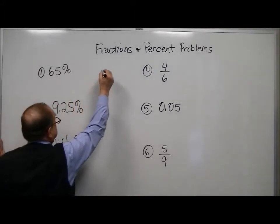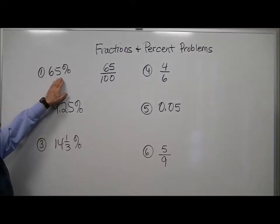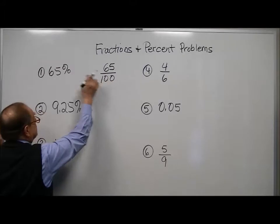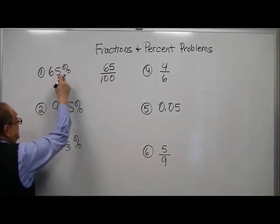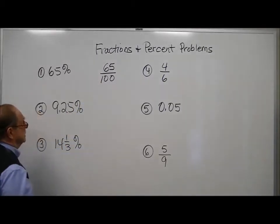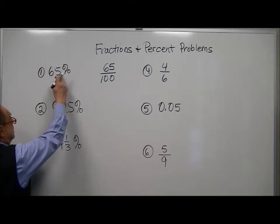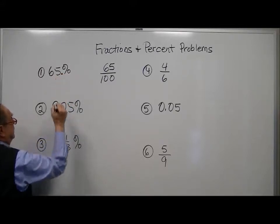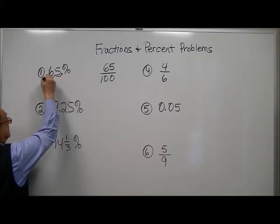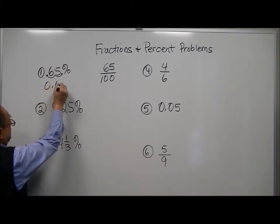The rule is that this percent sign means that this is over 100. So we can think of this as 65 over 100. Now we want to convert it to a decimal. If you read this, it's 65 hundredths. The shortcut way I often mention to students is when you take away the percent sign, your decimal is right there. You're going to move the decimal two places to the left. So this now becomes 0.65.